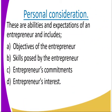When it comes to personal considerations: number one is your objective — what are your aims and what do you intend to provide? Number two is skills — what skills do you have as an entrepreneur, what can you offer without even employing people? Number three is the entrepreneur's commitment — are you committed or are you tied up in other businesses? Number four is the entrepreneur's interest — are you genuinely interested in it?